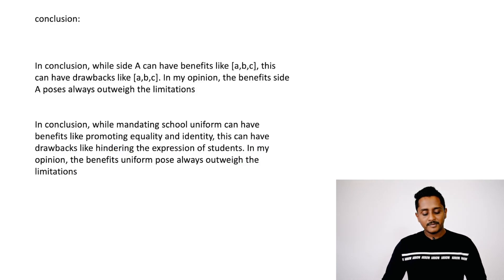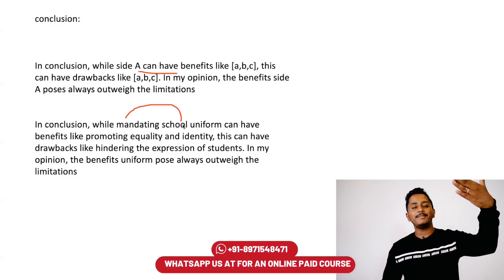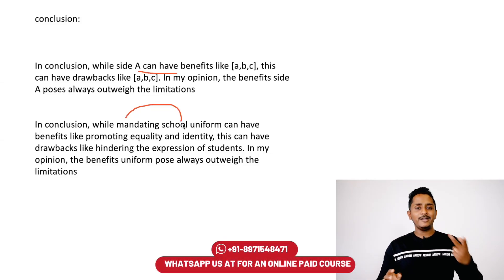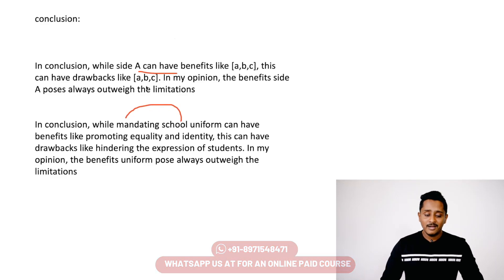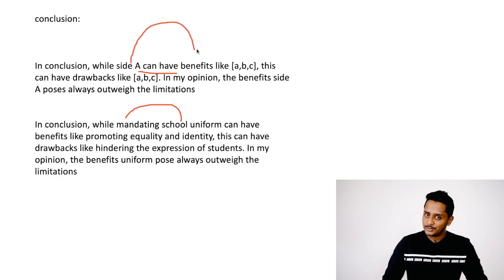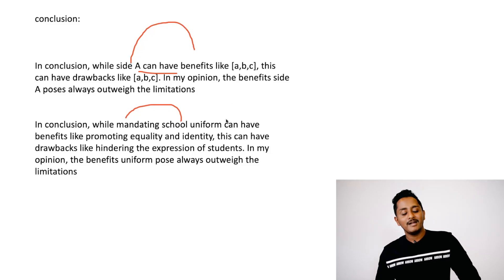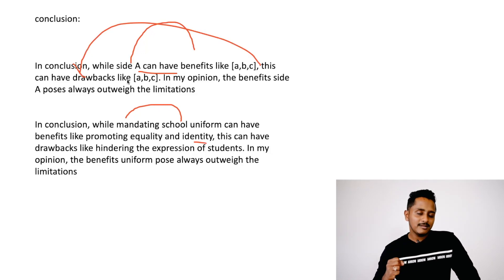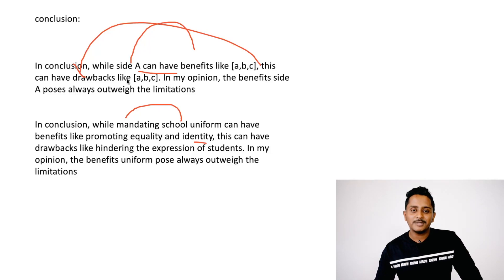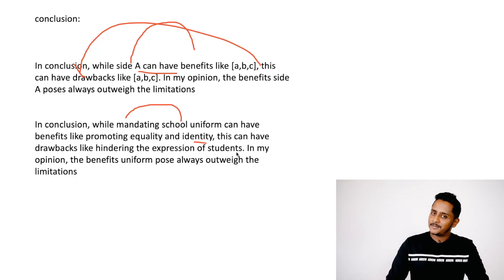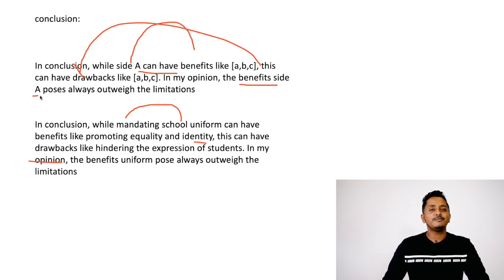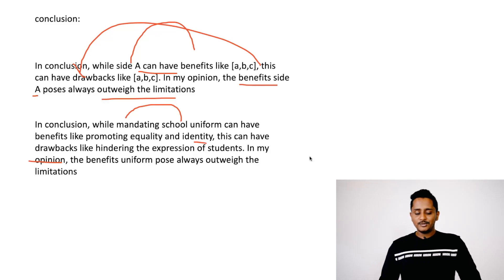In conclusion, it's all about summarizing paragraphs two, three, and four in two lines — don't write anything extra. 'While mandating school uniforms can have benefits like equality, oneness, and identity, this can have drawbacks such as hindering the expression of students or financial burden. In my opinion, the benefits of mandatory uniforms always outweigh the limitations.' Use the template — it will help.